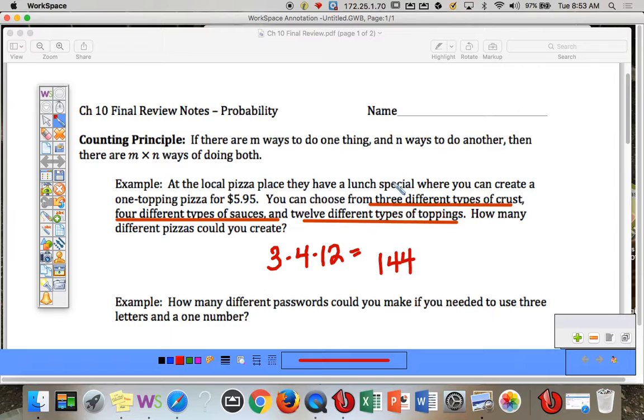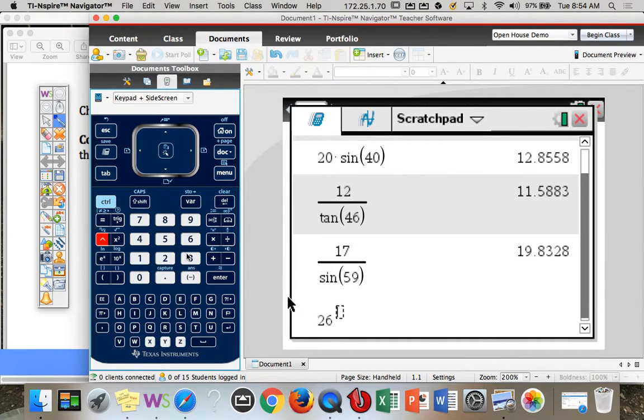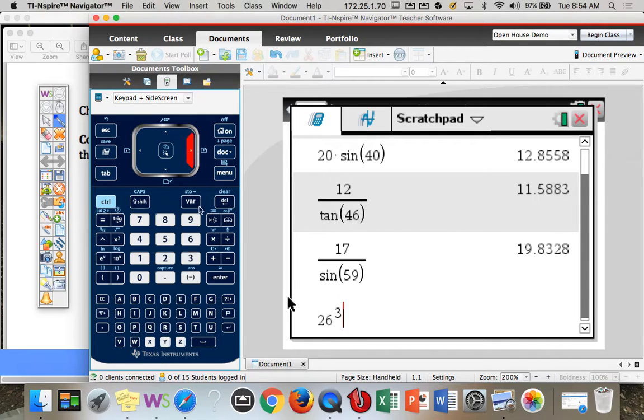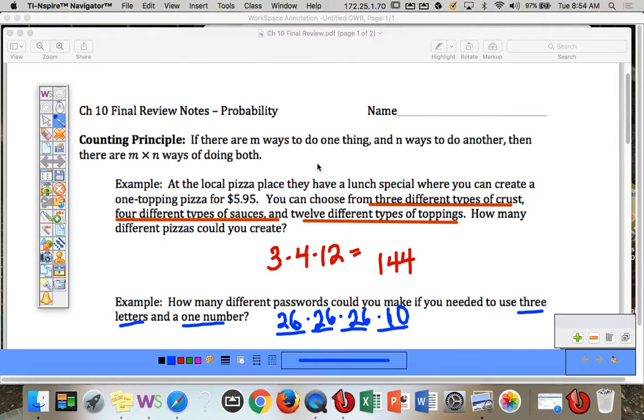Here's another example. How many different passwords could you make if you needed to use three letters and one number? So here's three letters and one number. And letters, there's 26. And assuming that you can repeat letters, 26 choices for each of the first three. And one number, from zero to nine, there are ten digits. So we can multiply this together. This is the same as 26 to the third times 10. So there would be 175,760 different ways that you can make a password.